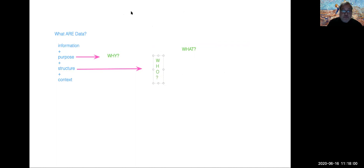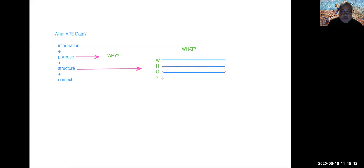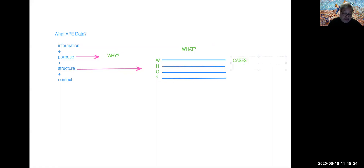The who are going to provide us with visuals in the form of rows. The who of the data are the different cases or observations that we form. These cases may take on very different kinds of formats.